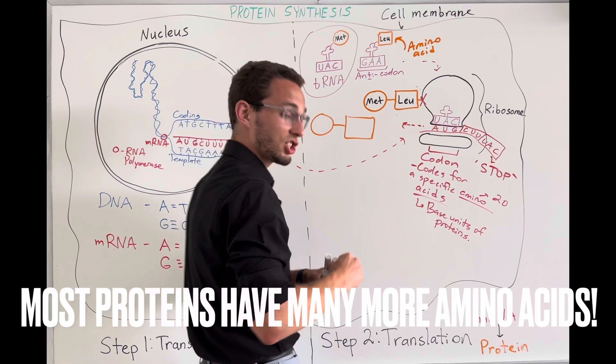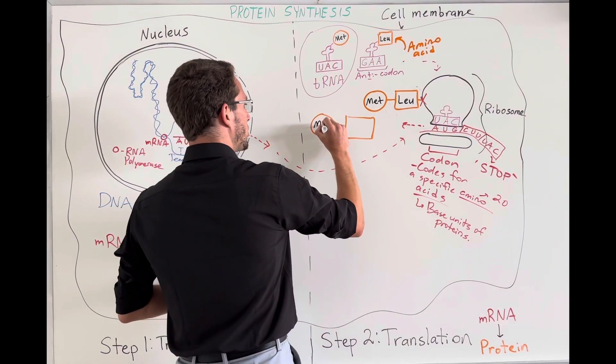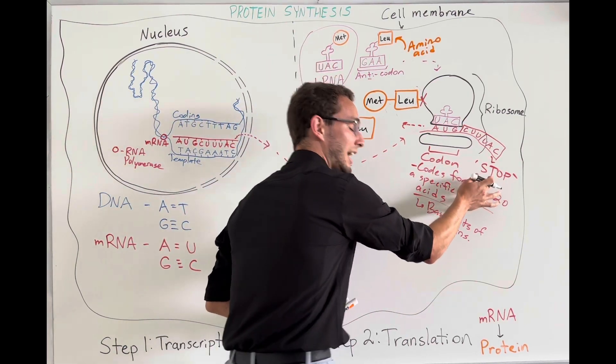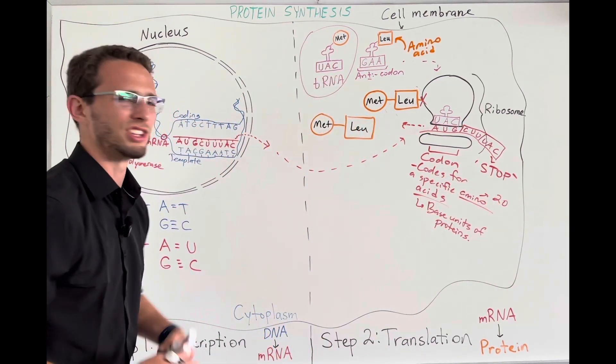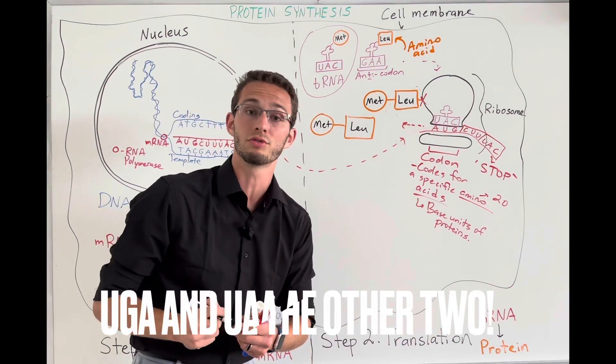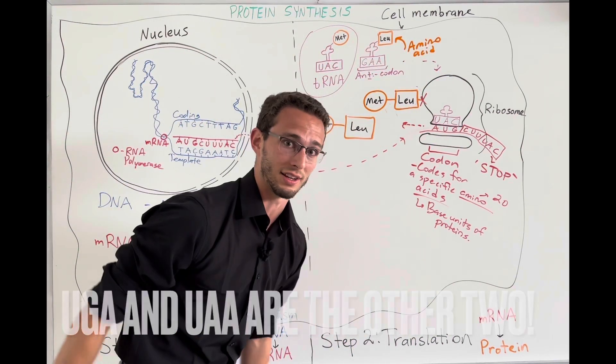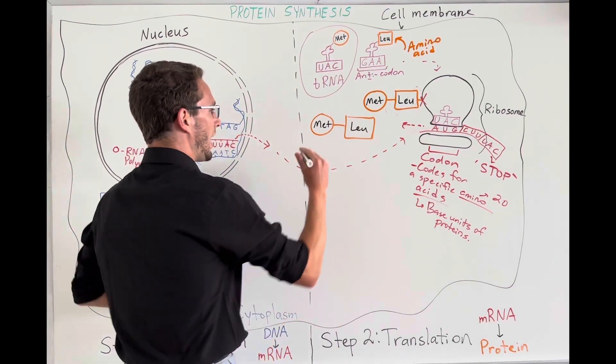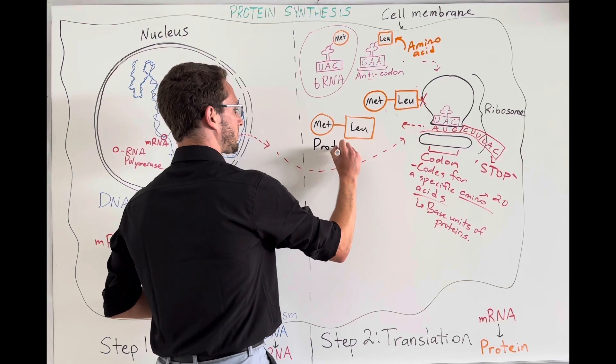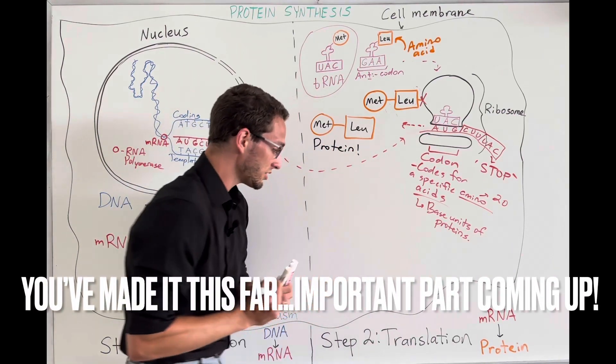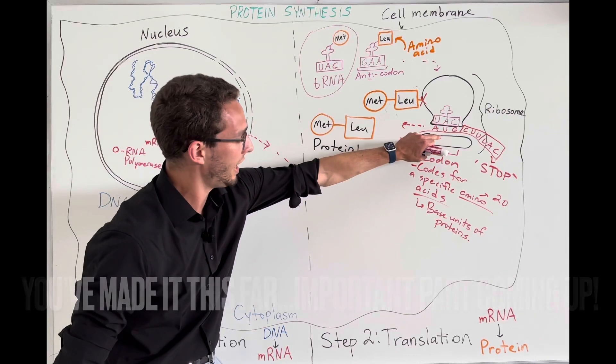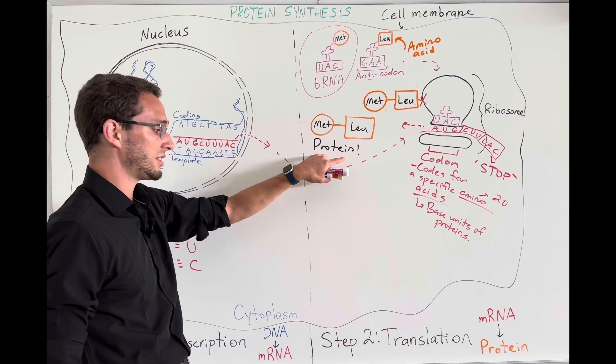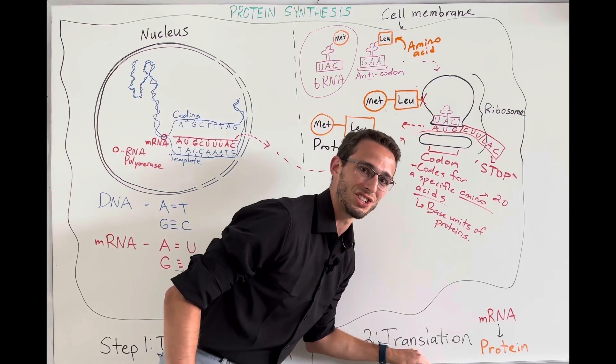So there are different codes, codons, that actually code for stop. I believe another one is UGA, for example. That codes for stop. It's because there's no tRNA to match with it as an anticodon. No amino acid change. Ribosome cuts it off. So here is our finished protein. Wonderful. And that was the goal, right? Translation, taking mRNA, attaching amino acids together in the ribosome and producing the protein. And that is called translation.